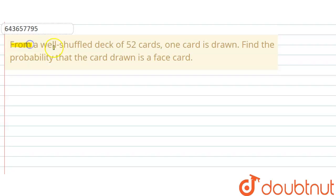It is given that from a well-shuffled deck of 52 cards, one card is drawn. So we have to find the probability that the card drawn is a face card.